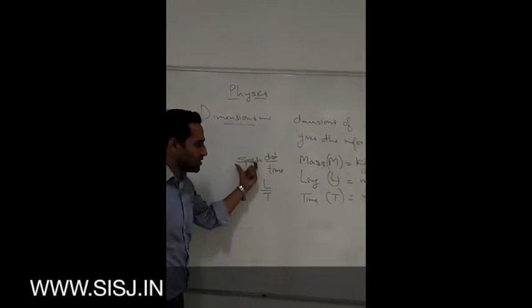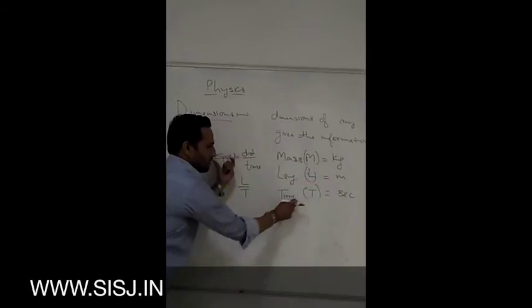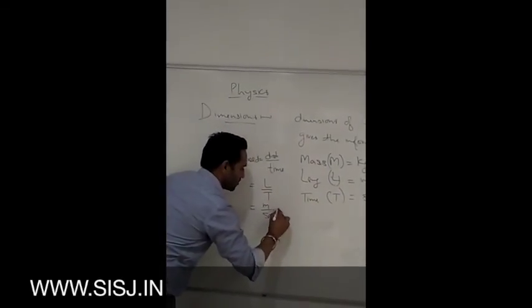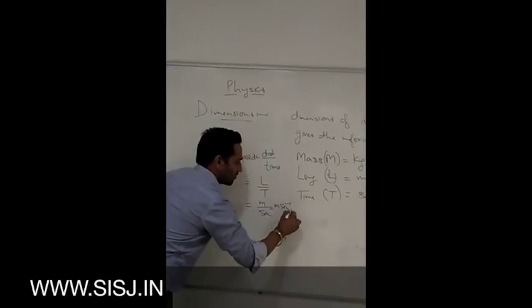So, what can be the possible unit of speed? For length, it is meter. For time, it is second. It will become meter divided by second, which will become meter second inverse.